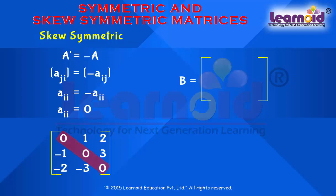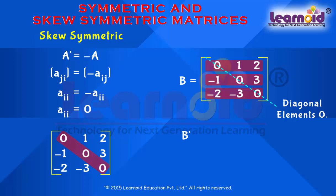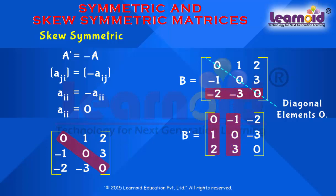Let B be a matrix with elements: 0, 1, 2; minus 1, 0, 3; and minus 2, minus 3, 0. B transpose is equal to: 0, minus 1, minus 2; 1, 0, minus 3; and 2, 3, 0. B is a skew symmetric matrix as B transpose is equal to minus B.